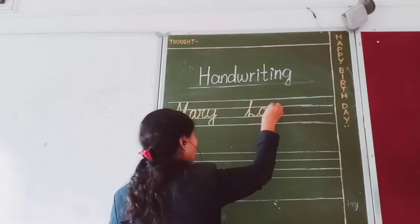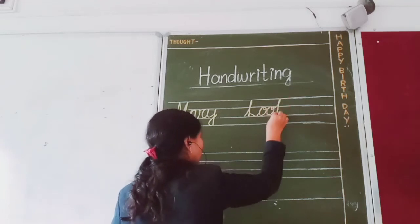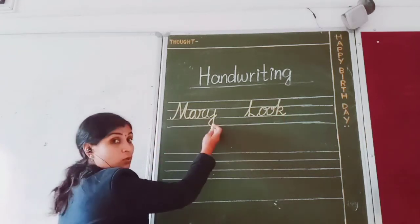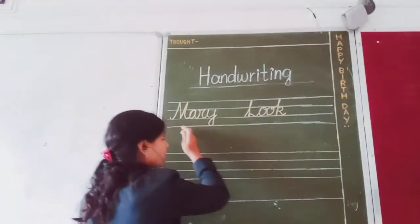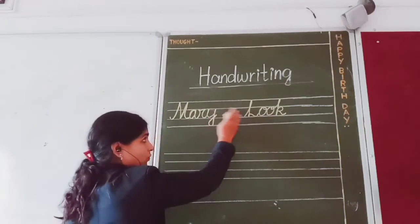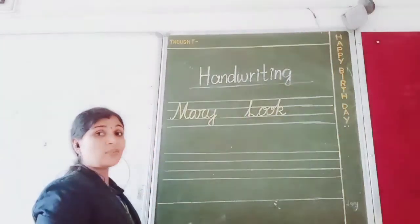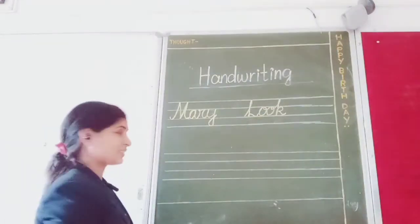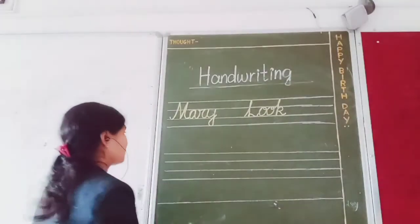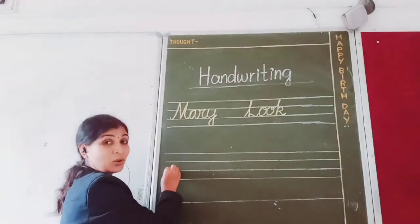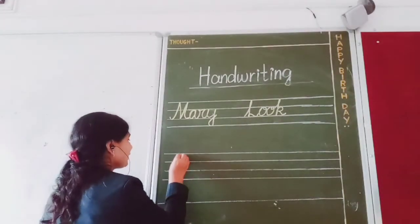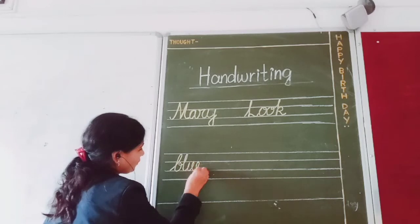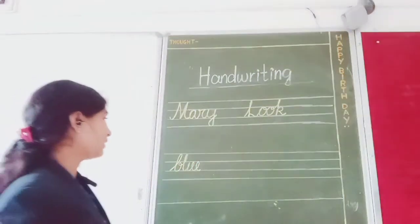See children, I am writing the words here. One word I have already written — 'Mary' — and this is the second word 'look.' L-O-O-K, look. There is a gap between these two words, so whenever you are writing words, maintain the space. Now we have to write 'blue' — the spelling is B-L-U-E.